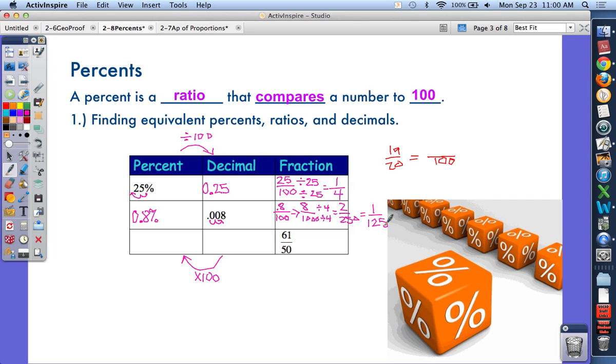The last one, starting with the fraction, to get the percent, just get it to be out of 100. If I have 61 out of 50 and want to make it 100, I multiply by 2, so multiply the top by 2, giving me 122. That's 122%. You can have a percent over 100. To get it to a decimal, divide by 100, moving the decimal two spaces to the left. This should be a review. You'll have some of these in your quick check. If you need more help, open your book and look at more examples.